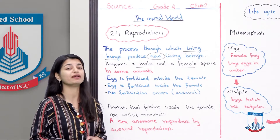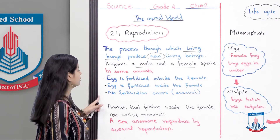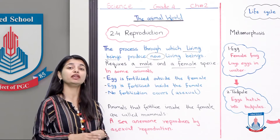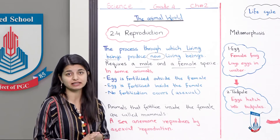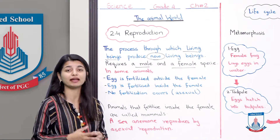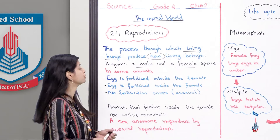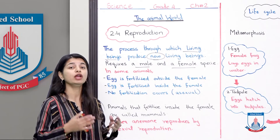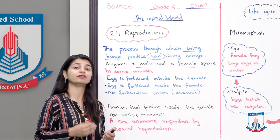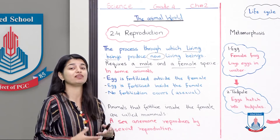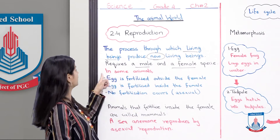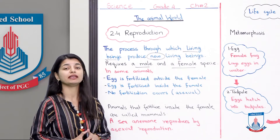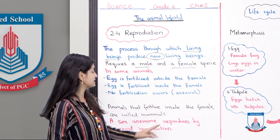The other type is where the egg is fertilized inside the female. The male fertilizes the egg inside the female body, and a new offspring comes from the female body into the world. This type of animal, where fertilization occurs inside the female, we call mammals. Mammals, instead of giving birth to eggs, give birth to real offspring — actual living beings.